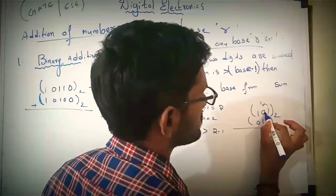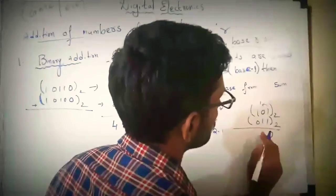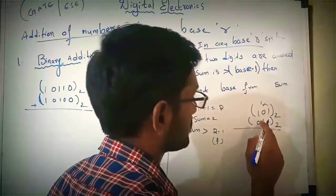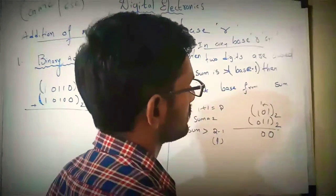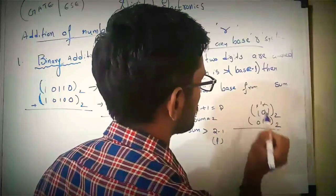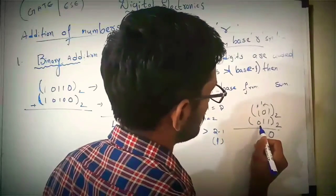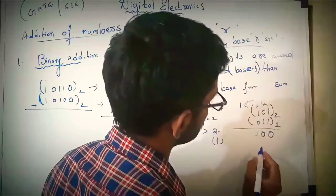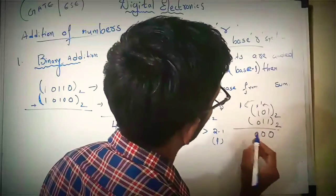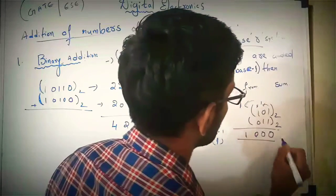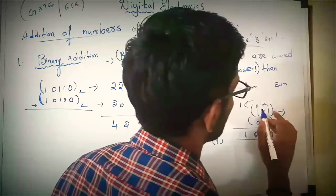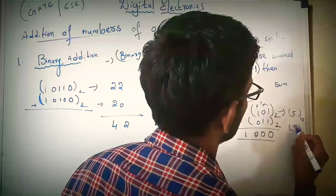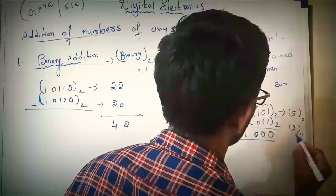Next, this 1 will be carry. 1 plus 0 is 1, 1 plus 1 is 2. Again we are getting sum greater than 1, so subtract 2 from 2, this is 0. We are again getting another carry of 1. So 1 plus 1 is 2, sum is greater than 1, subtract 2 from 2, this is 0 and we get carry as 1. Let's see the decimal equivalent value: the value will be 1. Here 101 is the decimal equivalent value, this is 5.